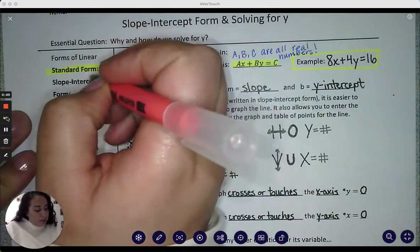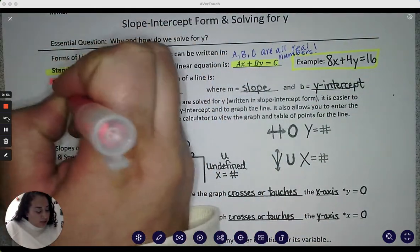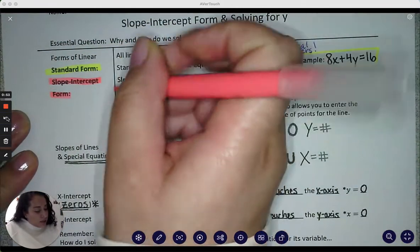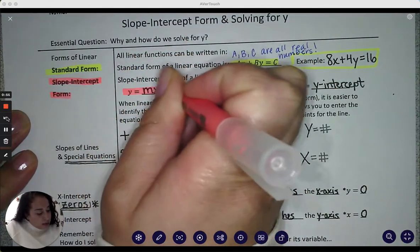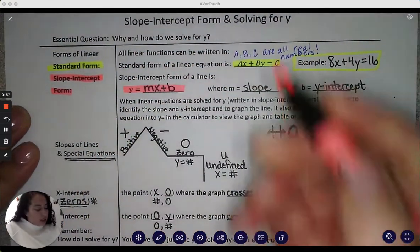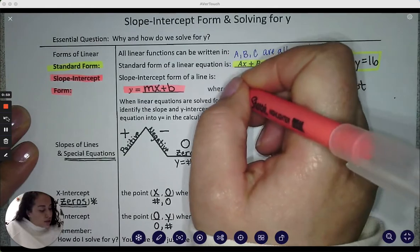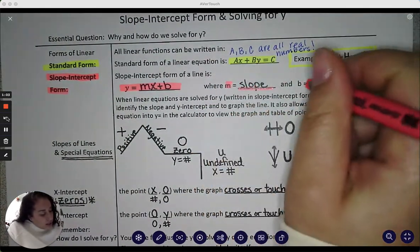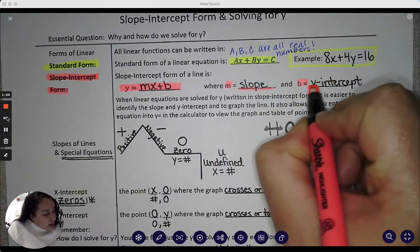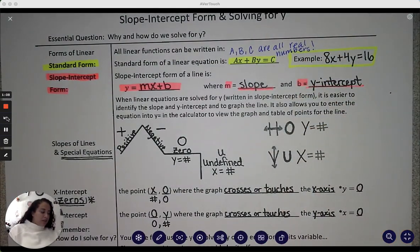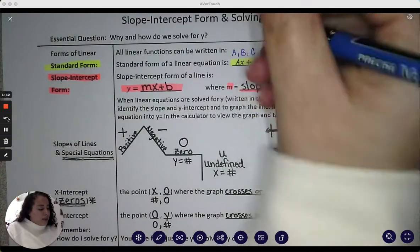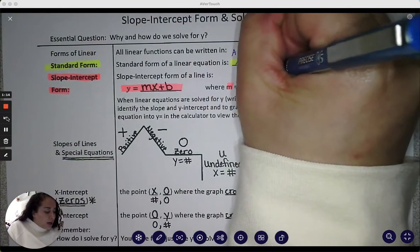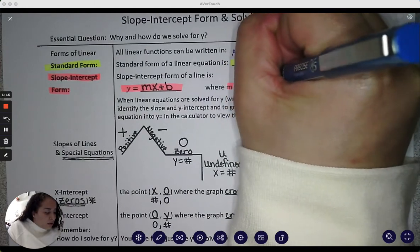Slope intercept form, this is the one that we all know and love so much, is when we have y equals mx plus b, where m is our slope, and b is the y-intercept. So just as a reminder, slope is our rise over run.